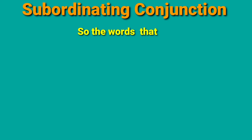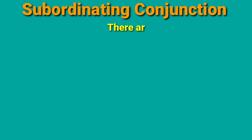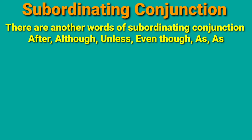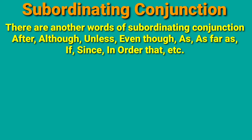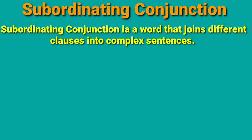So, the words 'that,' 'because,' and 'when' are words of subordinating conjunction. Dear students, there are other words of subordinating conjunction as well: after, although, unless, even though, as, as far as, if, since, in order that, etc. So, the subordinating conjunction is a word that joins different clauses into complex sentences.